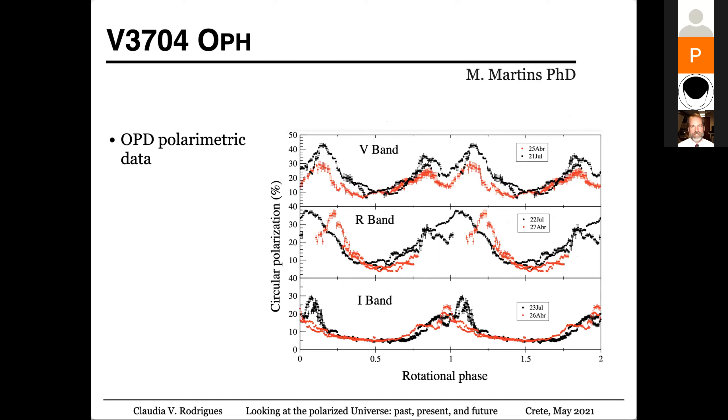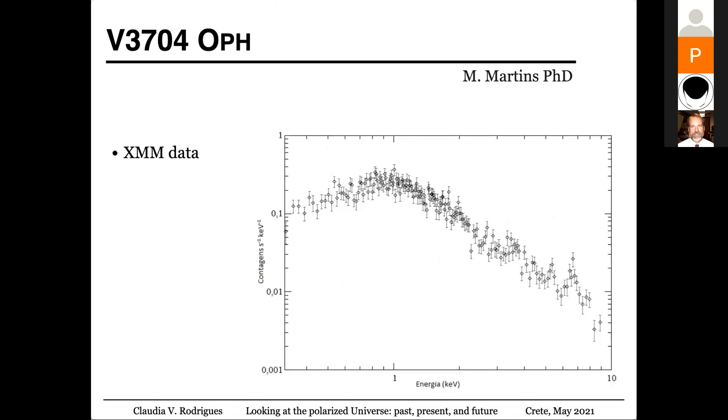Here you can see that the object, the polarization varies from cycle to cycle. Here we are talking again about some hours of rotation period. And for this object, we have also XMM data. So here we are seeing the bremsstrahlung emission from the post-shock region.